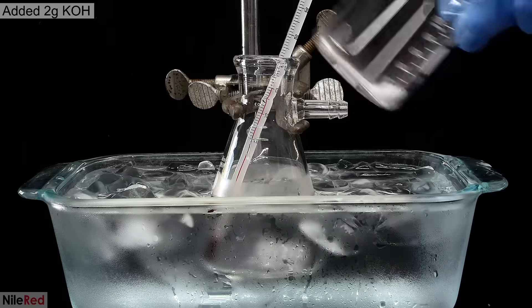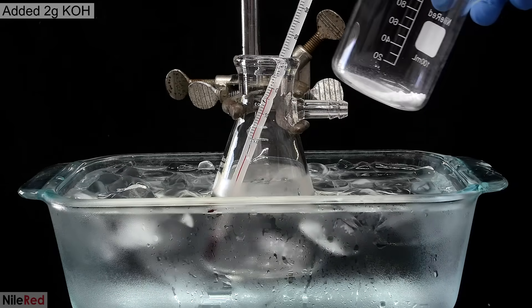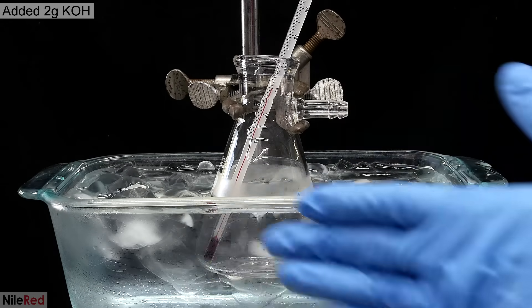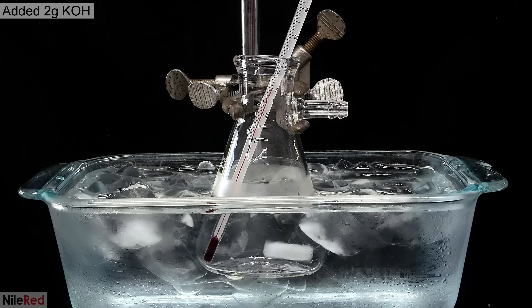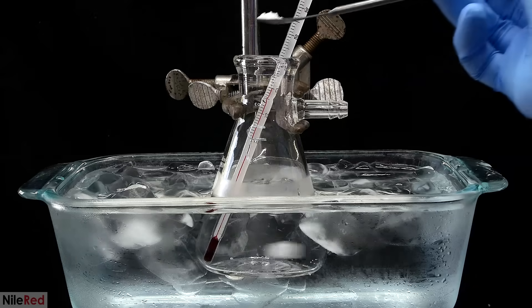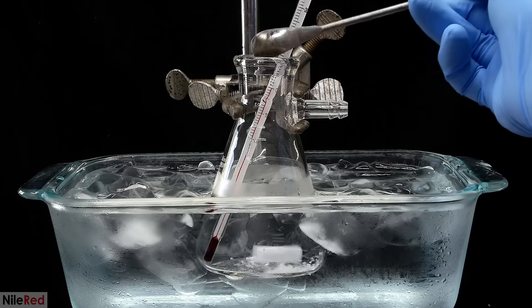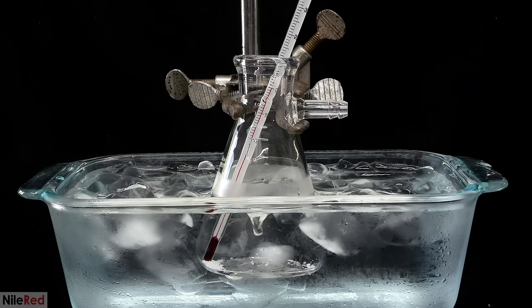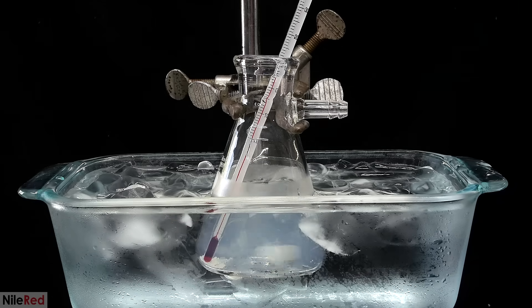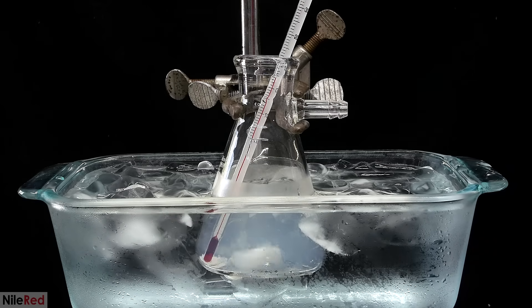A few minutes later, it's back to around 0°C, and now it's time to add 2 grams of crushed potassium hydroxide. It's important to add it in small amounts because with each addition, the temperature is gonna rise. In some of the additions, the temperature spiked to around 8°C, but I never let it go higher than that.